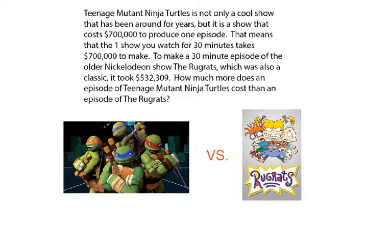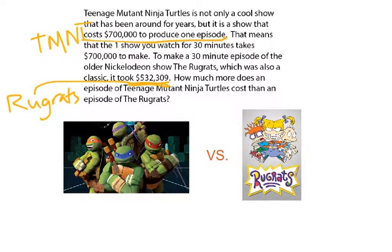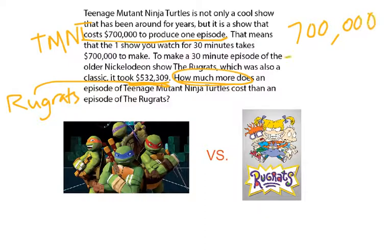They gave us some information — the cost of producing one episode of Teenage Mutant Ninja Turtles, and the cost of producing one episode of the Rugrats. They're asking how much more does an episode of the Teenage Mutant Ninja Turtles cost than an episode of the Rugrats. When I see things like 'how much more,' that's a comparison problem — it's a trigger that lets me know I'm going to be subtracting. So I have 700,000 and I have 532,309. I want to put the larger number on top, so I'm going to be subtracting 700,000 minus 532,309.